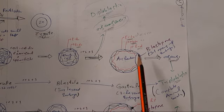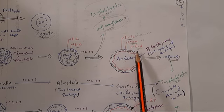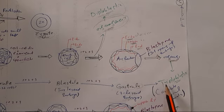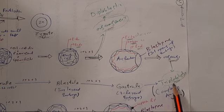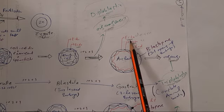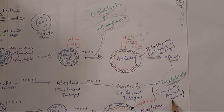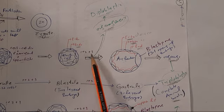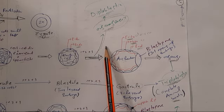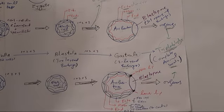Those animals having ectoderm, mesoderm, and endoderm during the embryonic stage and then undergoing organogenesis are called triploblastic animals. Those animals with only ectoderm and endoderm during embryonic stage — without mesoderm — and then undergoing organogenesis are called diploblastic animals. This is the distinction between diploblastic and triploblastic animals.